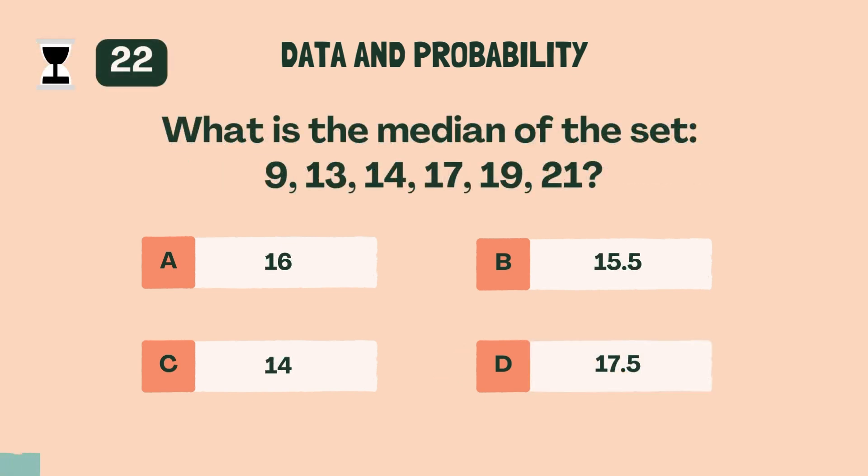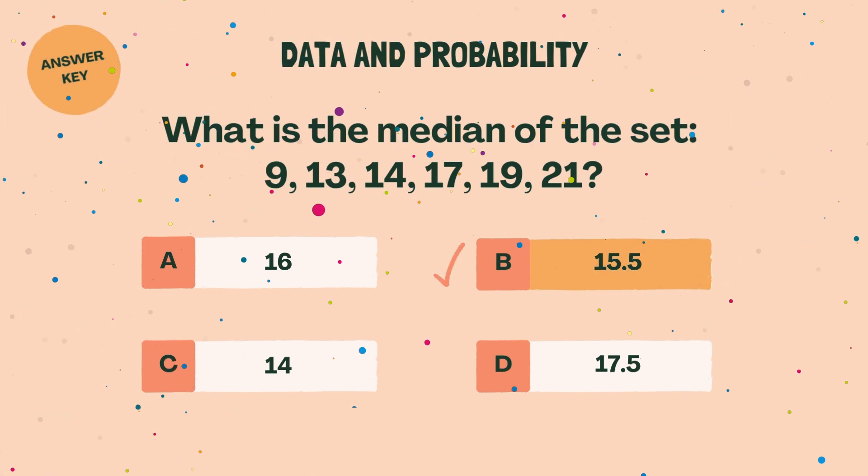What is the median of the set? 9, 13, 14, 17, 19, 21? B, 15.5.